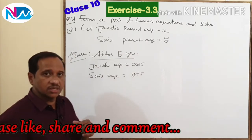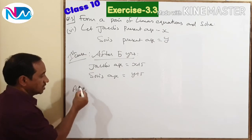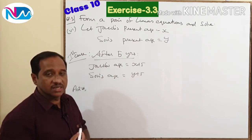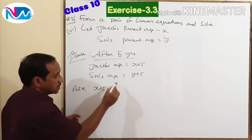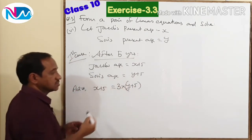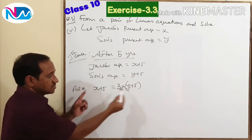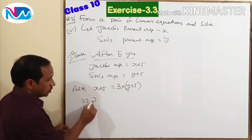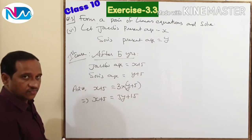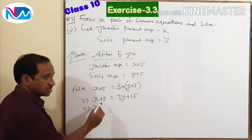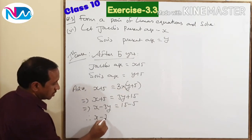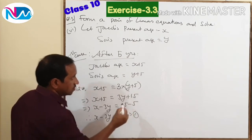According to the question, after 5 years Jacob will be 3 times as old as his son. So X plus 5 equals 3 times (Y plus 5), which gives X plus 5 equals 3Y plus 15. Taking 3Y to the left-hand side and 5 to the right-hand side, we get X minus 3Y equals 15 minus 5. Therefore, X minus 3Y equals 10, which is equation number 1.